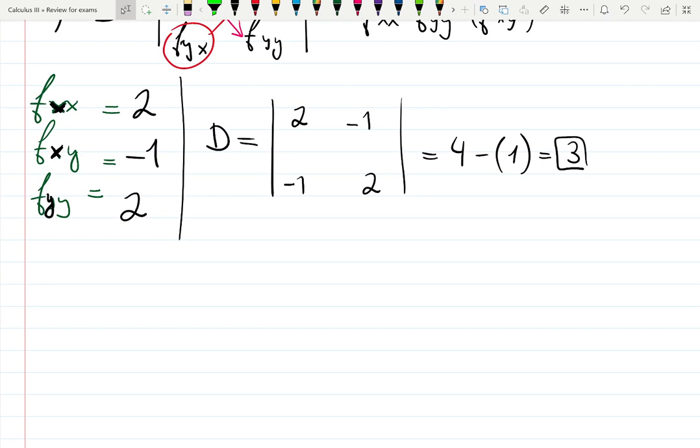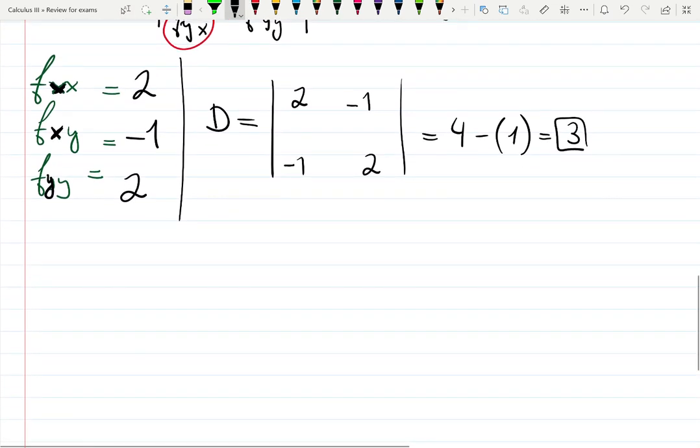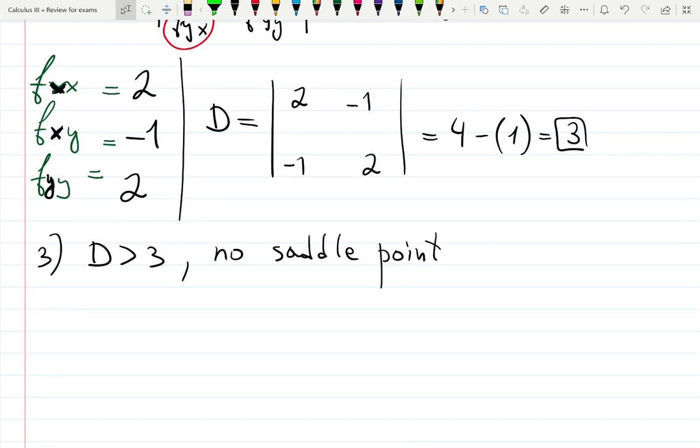So we can only say that this was step 2. Now, analyzing the sign, let's call it step 3. So D is positive. Then no saddle points. Remember, if it's negative, you immediately have a saddle point. Since it's positive, we don't really know if it's maximum or minimum.